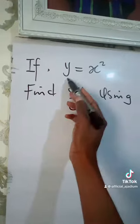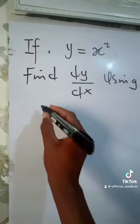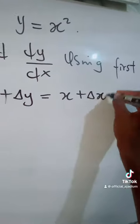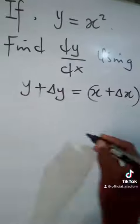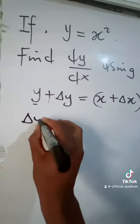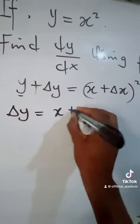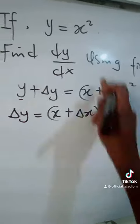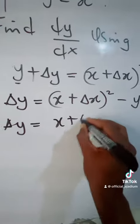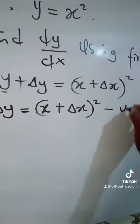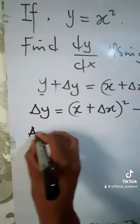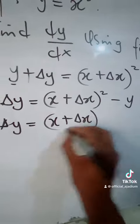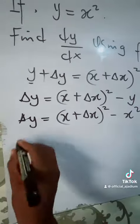So the first thing we have to do is add change in y and change in x. So this becomes y plus change in y equals x plus change in x, all squared. Then we transfer this to the other side: change in y equals x plus change in x, all squared, minus y. But y is x squared, so change in y equals x plus change in x, all squared, minus x squared. Then we expand this.